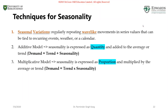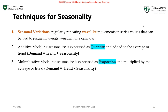There are two different approaches to deal with seasonality: additive models and multiplicative models. In an additive model we express seasonality as a quantity, whereas in multiplicative models we express seasonality as a proportion. The term used to express seasonality as a proportion is called a seasonal index, sometimes also called a seasonal relative.